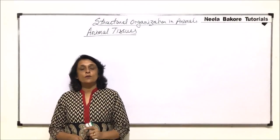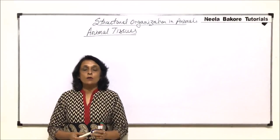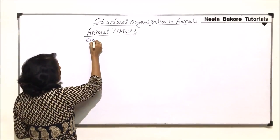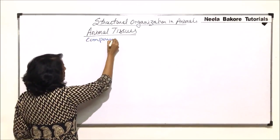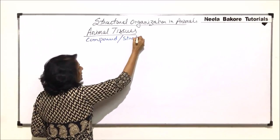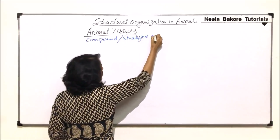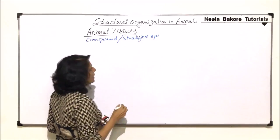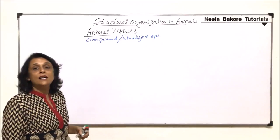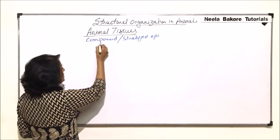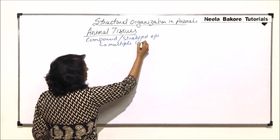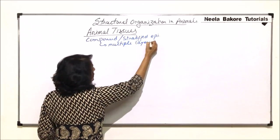In this video, we will be talking about compound or stratified epithelium. Compound or stratified means there are multiple layers of cells.